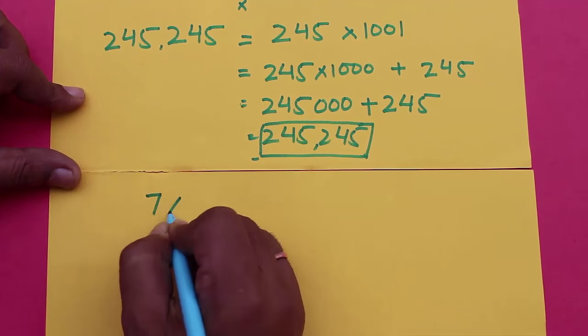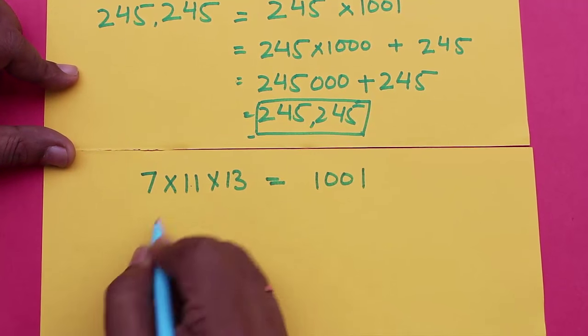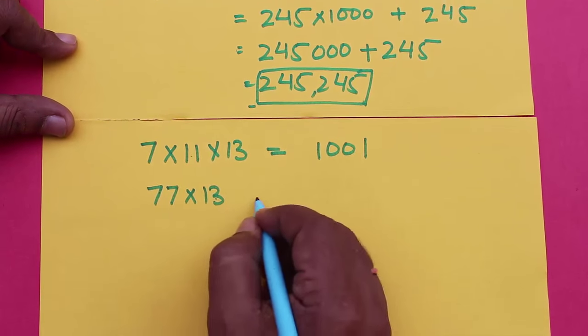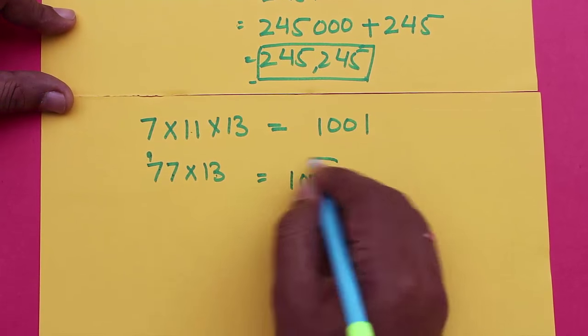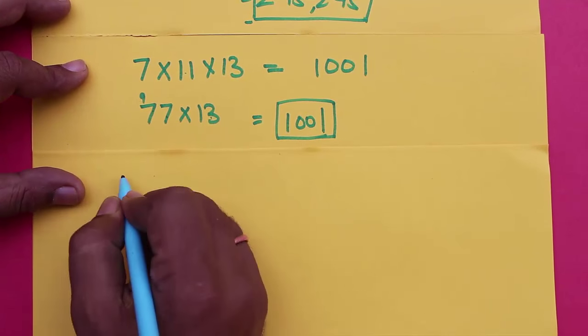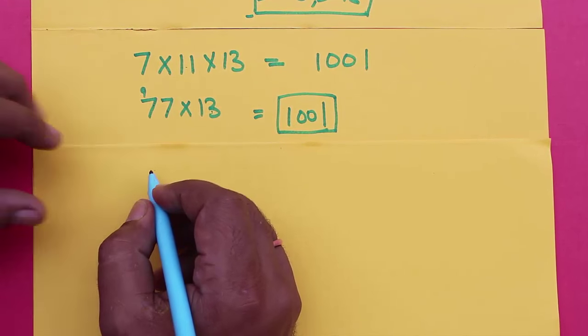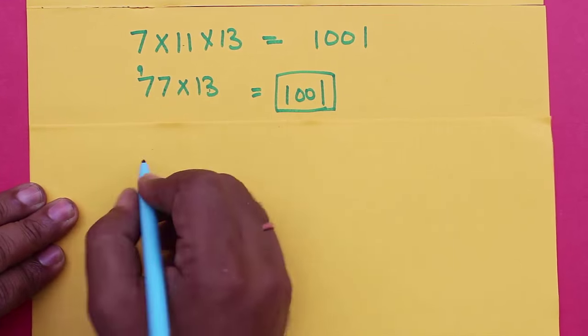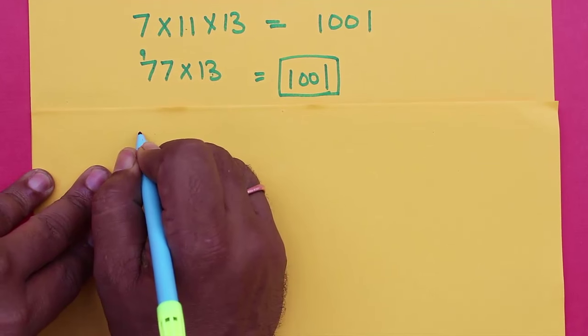We also see that when multiplying 7 into 11 into 13, we get 1001. This means that multiplying a number by 1001 will be the same as multiplying it by 7, 11, and 13, and the number will repeat itself.